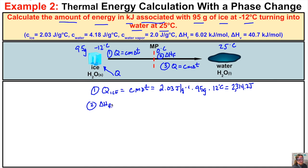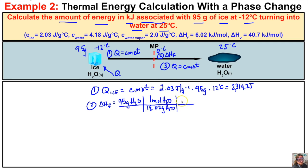For the heat of fusion, we take the mass of 95 grams of ice, divide by the molar mass of water which is 18.02 grams per mole, then multiply by the heat of fusion of ice which is 6.02 kilojoules per mole. So: 95 ÷ 18.02 × 6.02 = 31.7 kilojoules. Note that step one gives us joules and step two gives us kilojoules — we'll fix that in a moment.